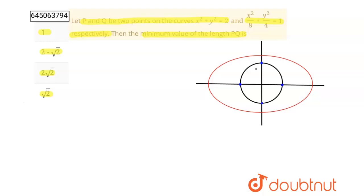So I am not saying that this is P or Q, forget this. I am saying that there is one random point on this circle and there is a random point on this ellipse. And distance between both points is minimum. So we have to find that minimum distance.